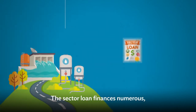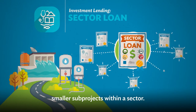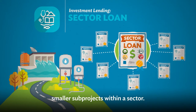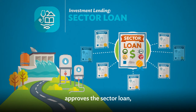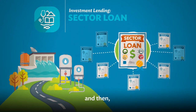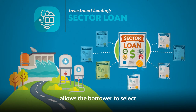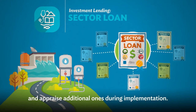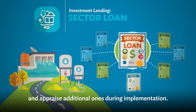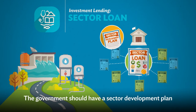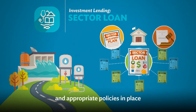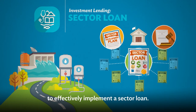The sector loan finances numerous smaller sub-projects within a sector. ADB appraises a few sub-projects, approves the sector loan, and then allows the borrower to select and appraise additional ones during implementation. The government should have a sector development plan and appropriate policies in place to effectively implement a sector loan.